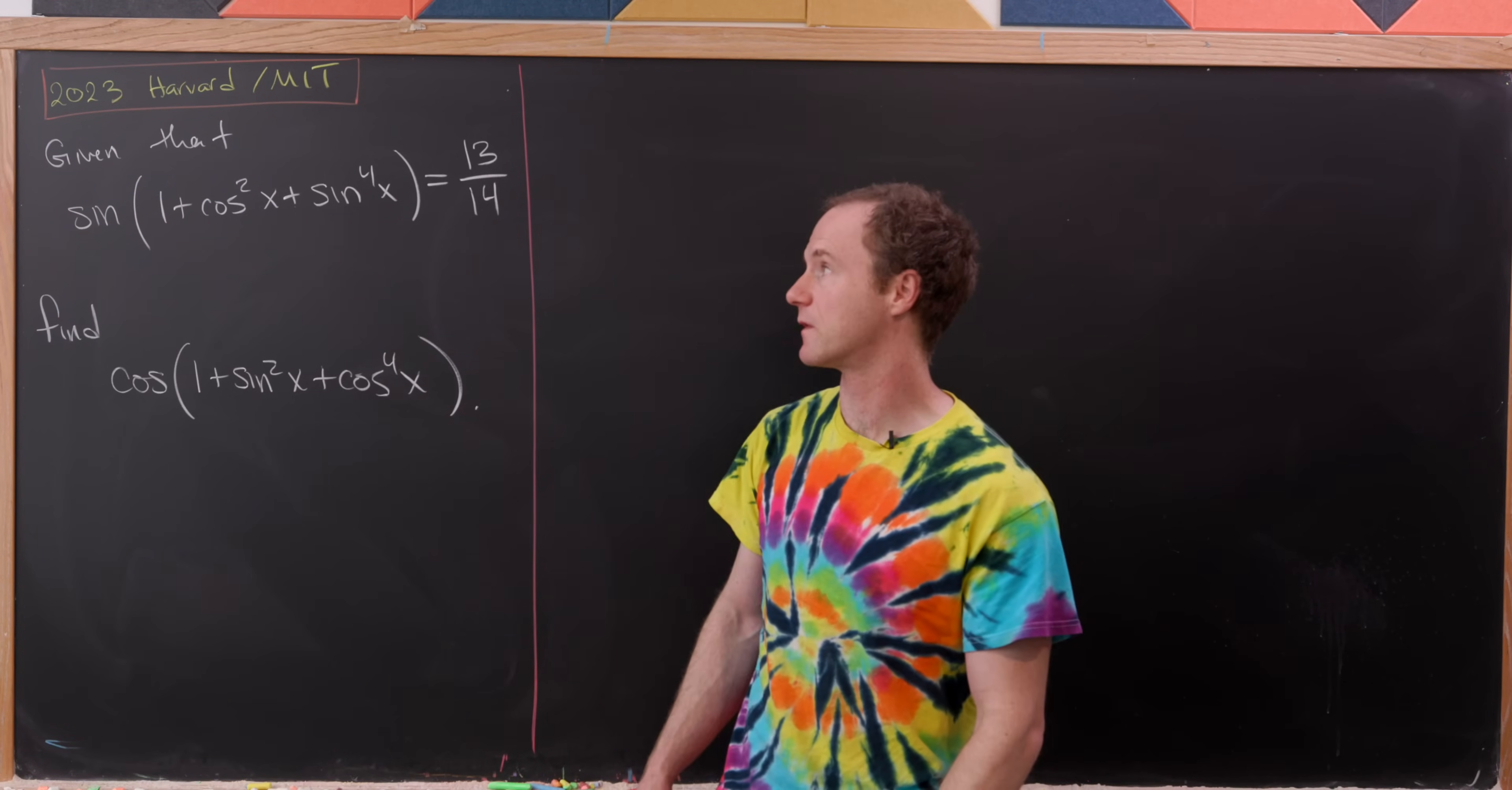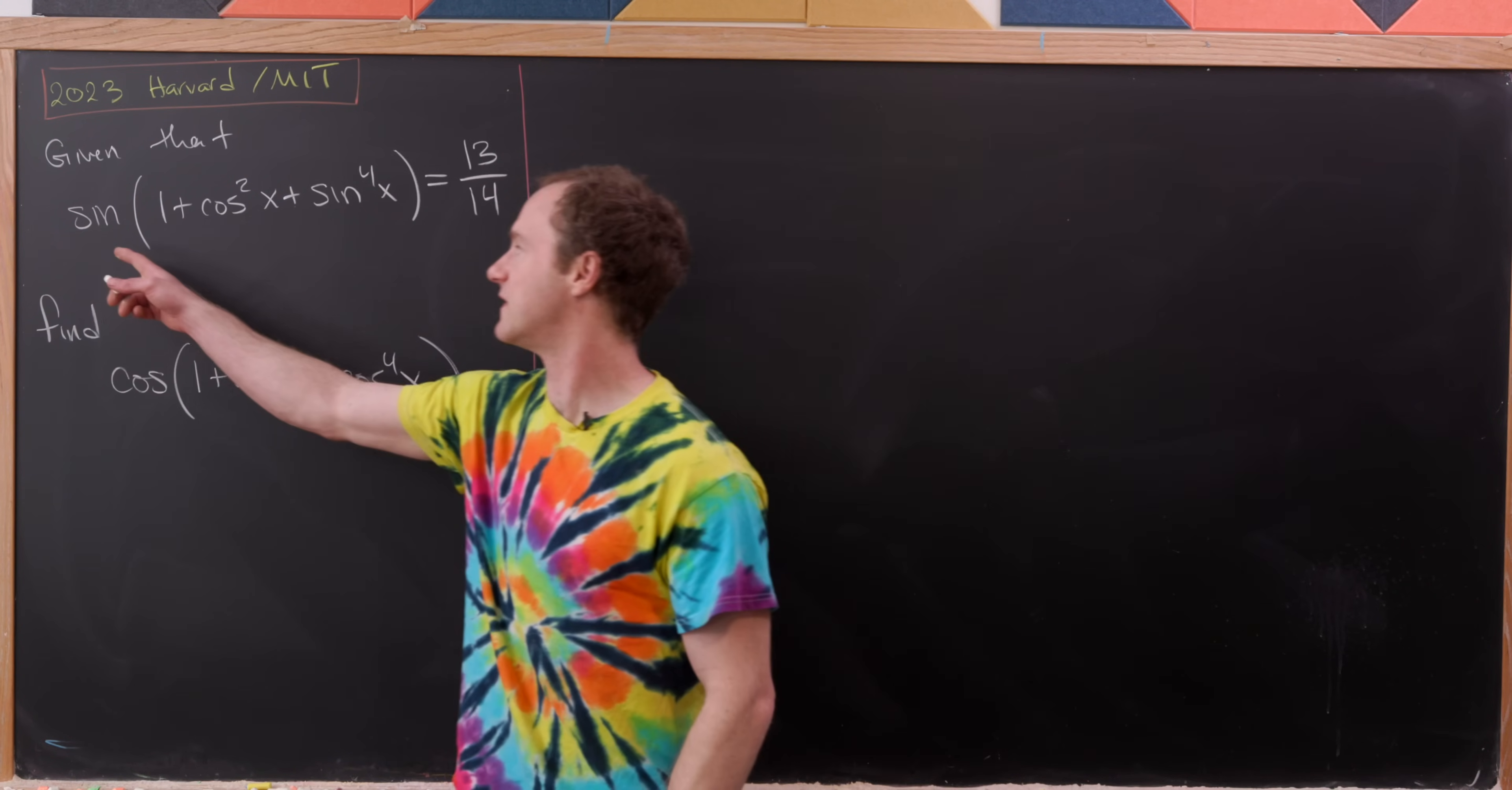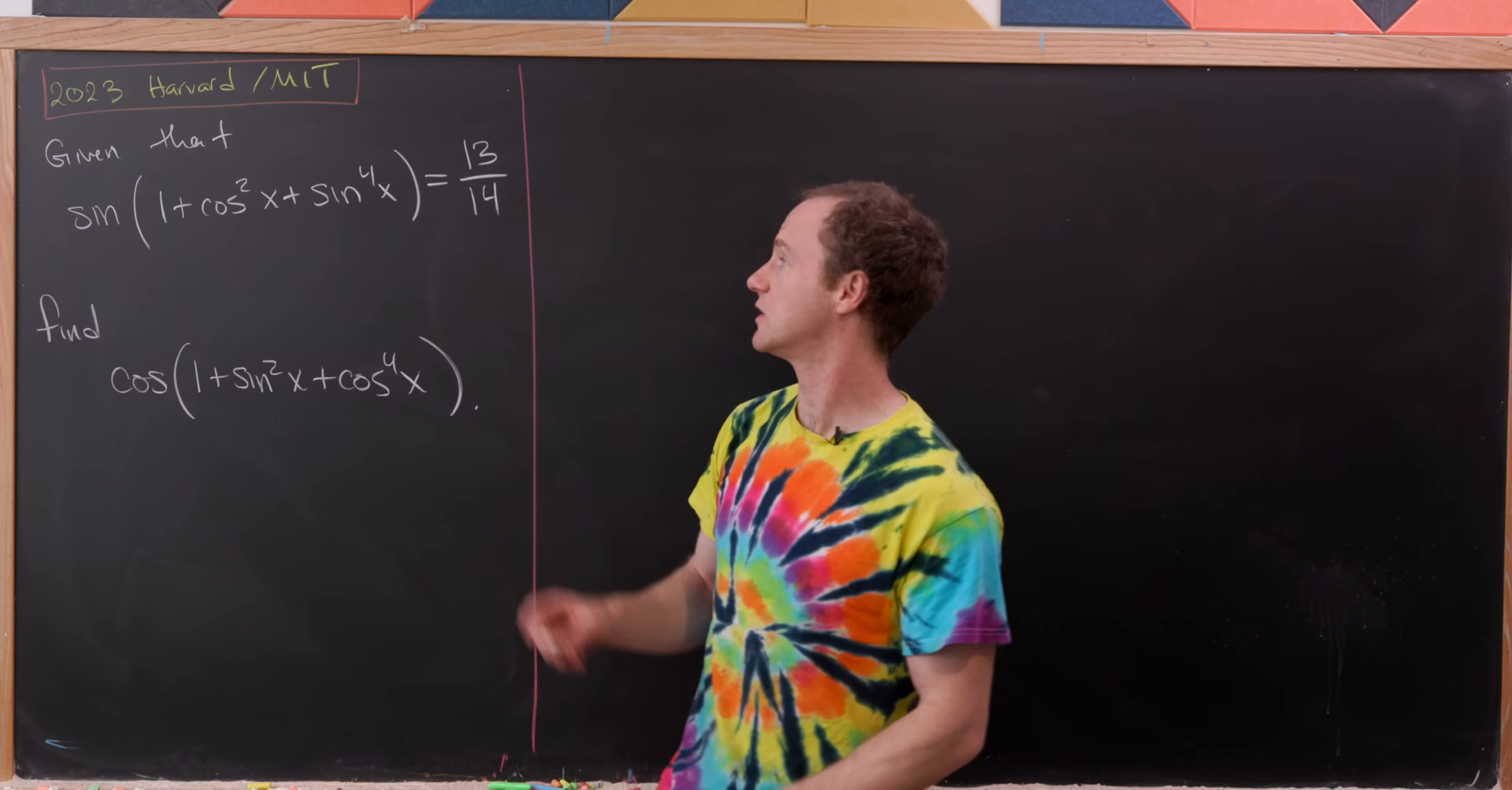Let's look at this nice trigonometry problem from the 2023 Harvard-MIT math contest. We are given that sine of (1 + cos²x + sin⁴x) is equal to 13/14.